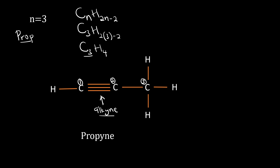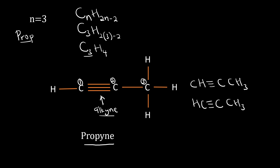For n equal to three, the name will be 'prop-' with the '-yne' ending, so the compound is called propyne. For the condensed structural formula, we write it as CH≡C-CH₃ — or equivalently HC≡C-CH₃ — to show that the triple bond is between two carbon atoms. This is our condensed structural formula for propyne.